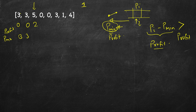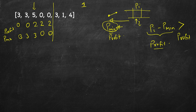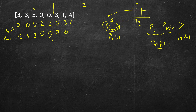Let's run through the example 3, 3, 5, 0, 0, 3, 1, 4. Starting with pmin = 3, profit = 0. When we reach price 5, profit becomes 2. Then pmin updates to 0. Finally, the maximum profit we can make is 4, purchasing at pmin (which is 0) and selling at price 4. This is how we solve for one transaction.